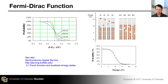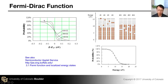The Fermi-Dirac function looks more like a step function and it transitions at the Fermi level. When energy is below the Fermi level, the probability is very high in general, and when energy is above the Fermi level, the probability is low. At zero temperature, this is a rigorous step function, but at a finite temperature there is a gradual transition at energy equals E_F.